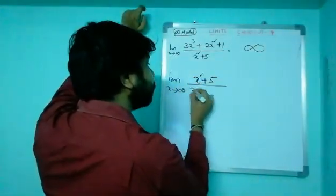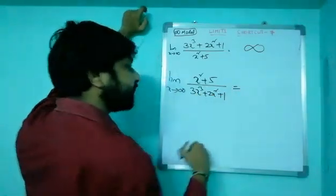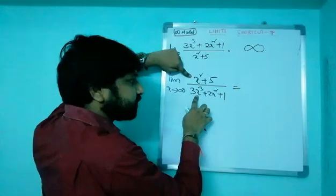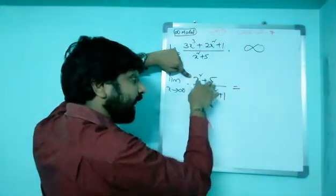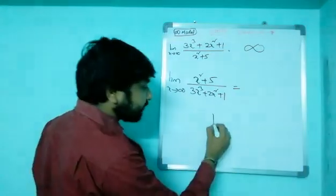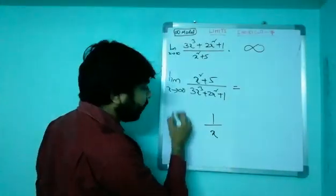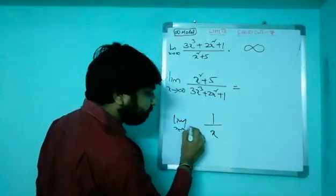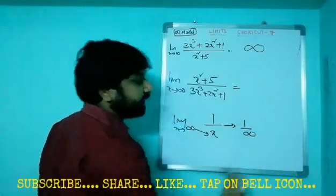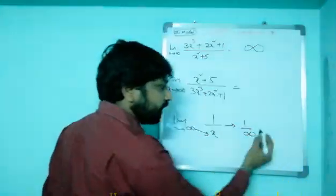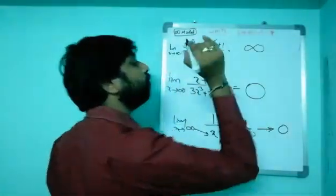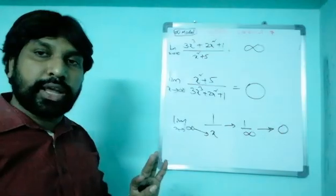For the other shortcut: limit x tends to infinity of (x² + 5) divided by (3x³ + 2x² + 1). Observe carefully — this is x square in the numerator, this is x cube in the denominator. After cancellation, x will be remaining in the denominator. Whenever x is remaining in the denominator, you get 1/x, and as x tends to infinity, 1/infinity is zero. So the answer is zero.